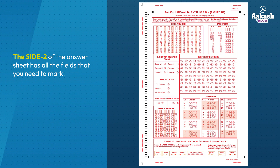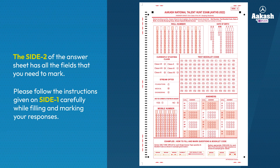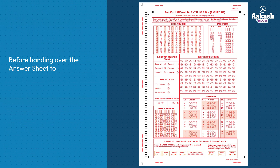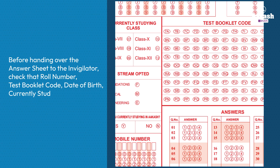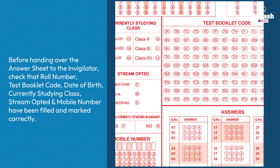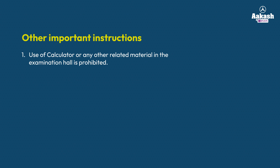The side two of the answer sheet has all the fields that you need to mark. Please follow the instructions given on side one carefully while filling and marking your responses. Before handing over the answer sheet to the invigilator, do check that roll number, test booklet code, date of birth, currently studying class, stream opted and mobile number have been filled and marked correctly.